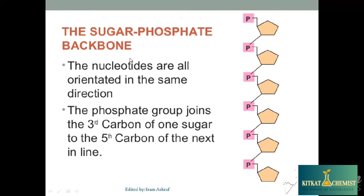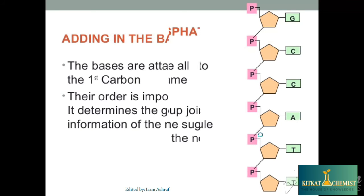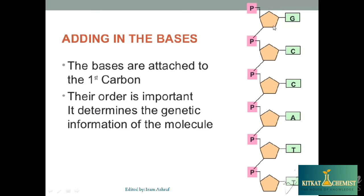The sugar and phosphate form the backbone. Carbon number 5 is important in the sugar structure — the carbons are numbered 1, 2, 3, 4, 5. The phosphate chains run along the backbone. The base is attached at Carbon 1 — it can be Guanine, Cytosine, Adenine, Thymine, or whatever base. The order of base attachment is very important.